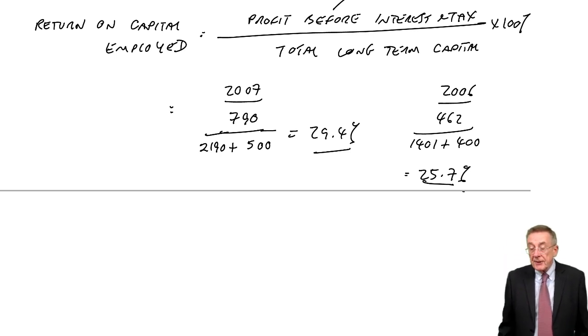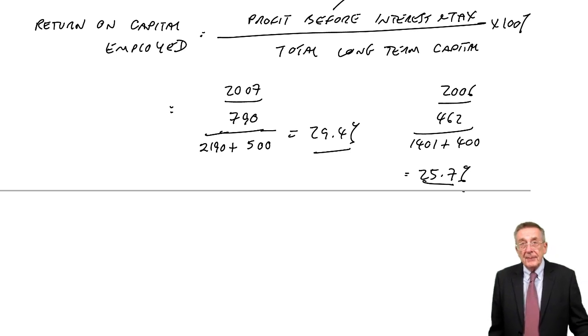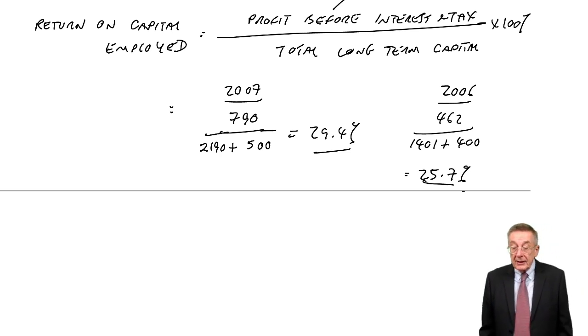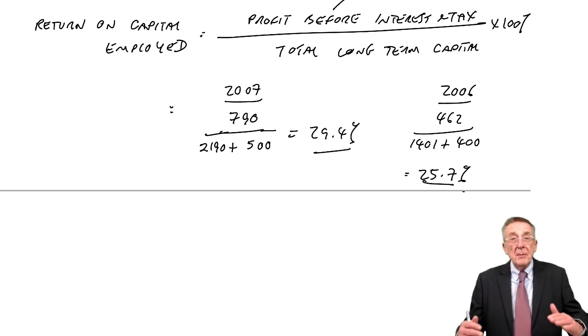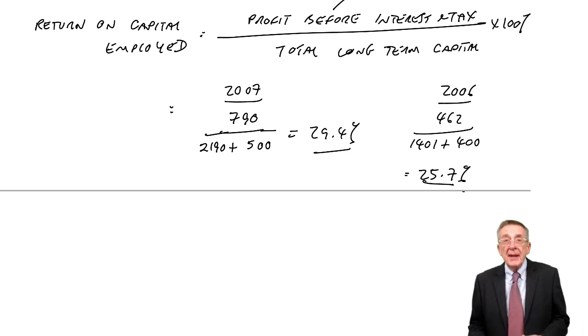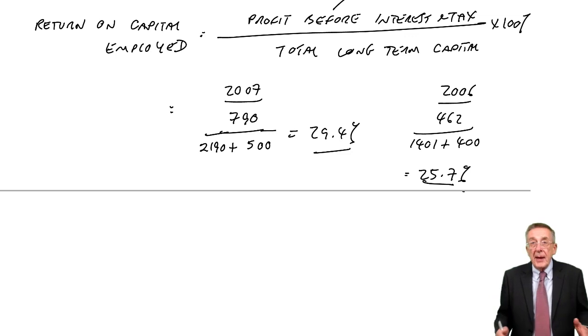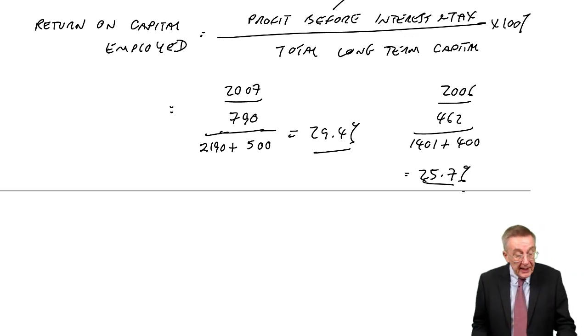There are two ways. You can either make more profit on everything you sell. If you make more profit on everything you sell, then that's going to increase return on capital. Or alternatively, you can sell more efficiently. Make more sales for the amount of capital involved. Let me show you what I mean.